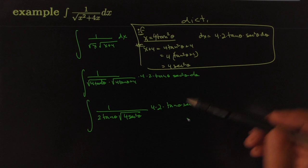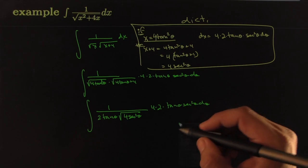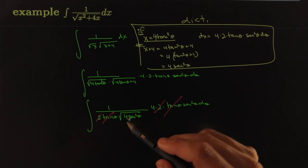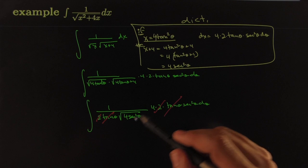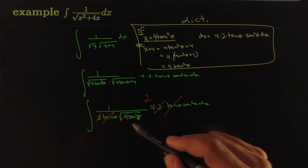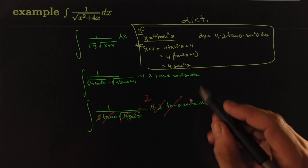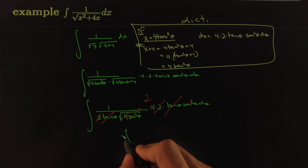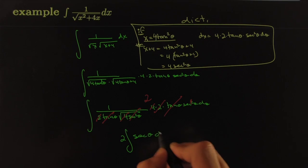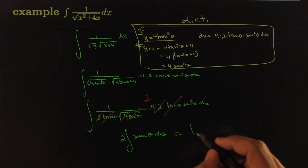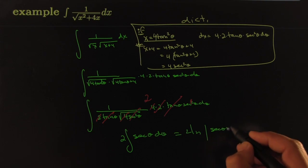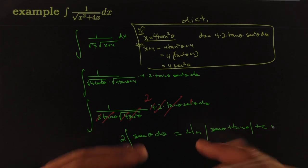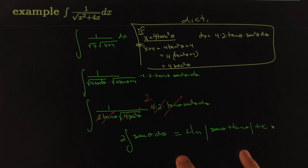After all the cancellations, you're left with 2 ∫ secθ dθ, which equals 2 ln|secθ + tanθ| + C — a well-known result covered in a separate video. Both methods work beautifully; this second approach is arguably more elegant. We'll see you next time for another example.